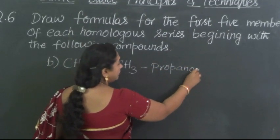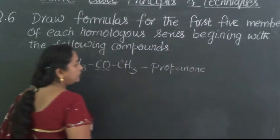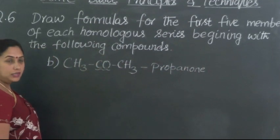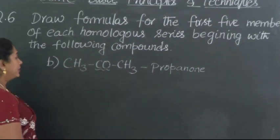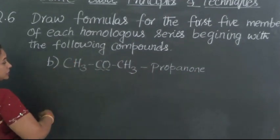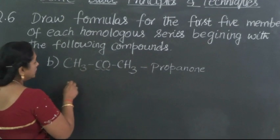So we are supposed to write the five members of this homologous series by taking propanone as the starting one. Now what would be the next compound of this? Add CH2 to this.